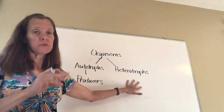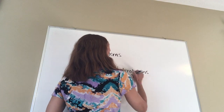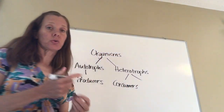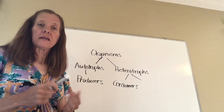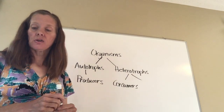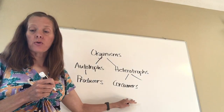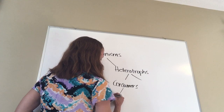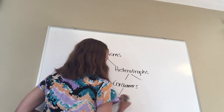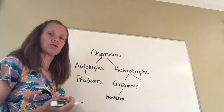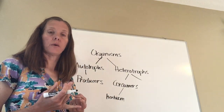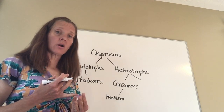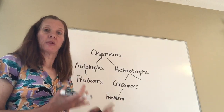Heterotrophs, however, are going to come in two separate categories. Heterotrophs are either going to be consumers, which is what the vast majority of animals are — any animal that's going to eat something else. Consumers can then be broken down into three more categories. A consumer is either going to be an herbivore; an herbivore is something that eats only plants, so you think of things like cows that eat only grass, giraffes, or deer — things that graze and don't eat anything but plant material.